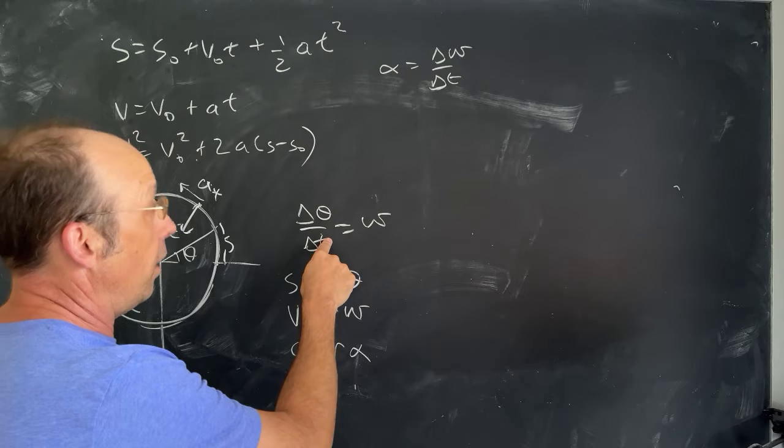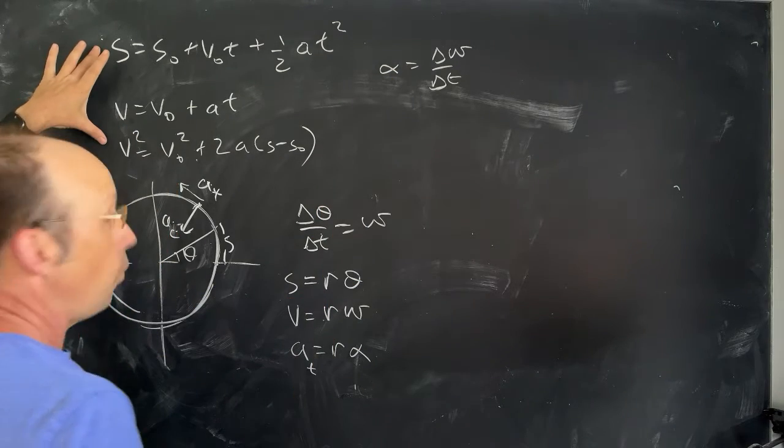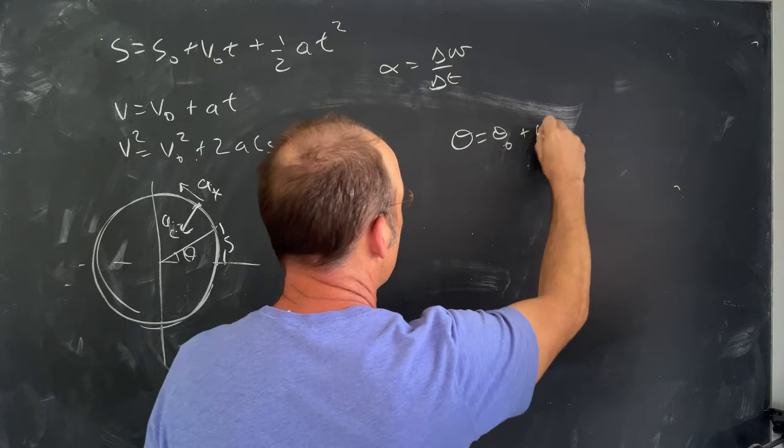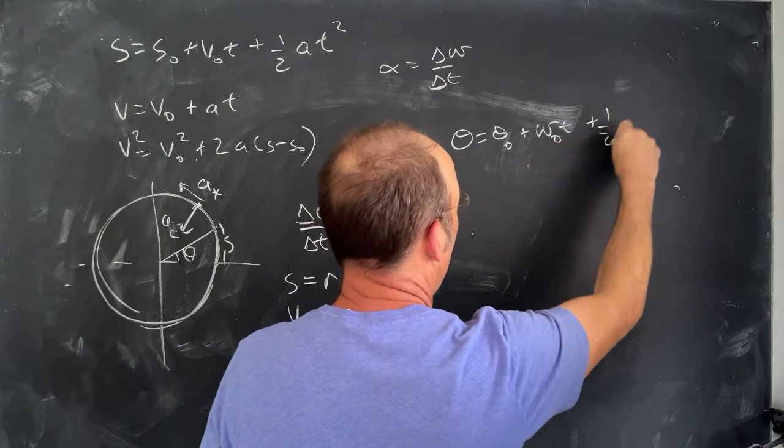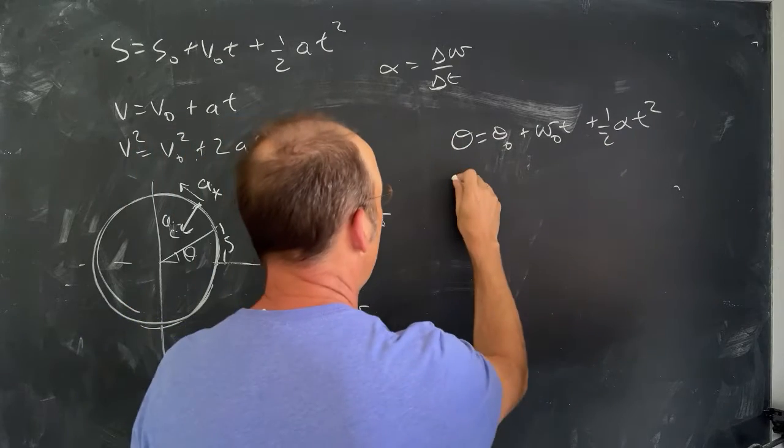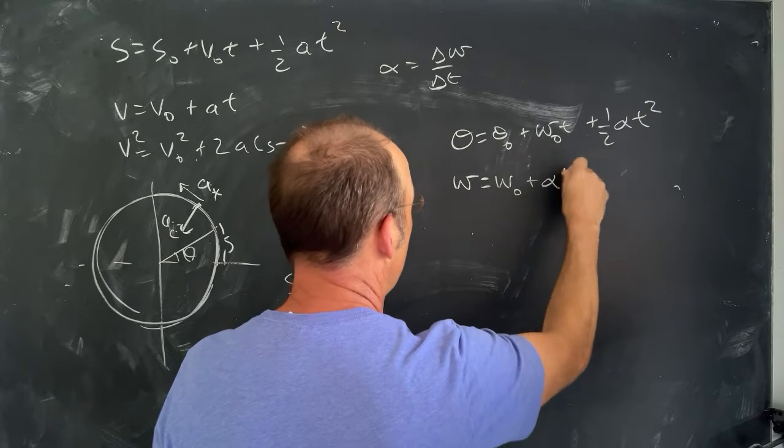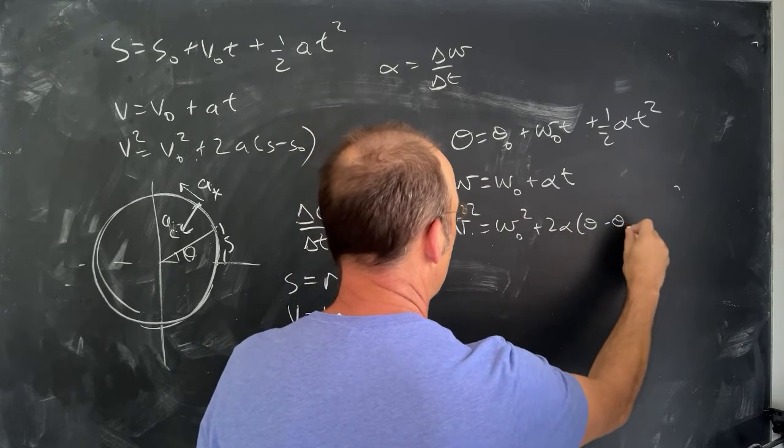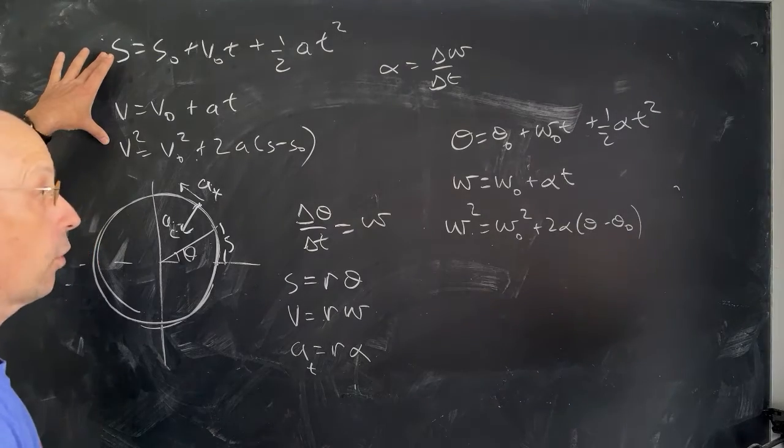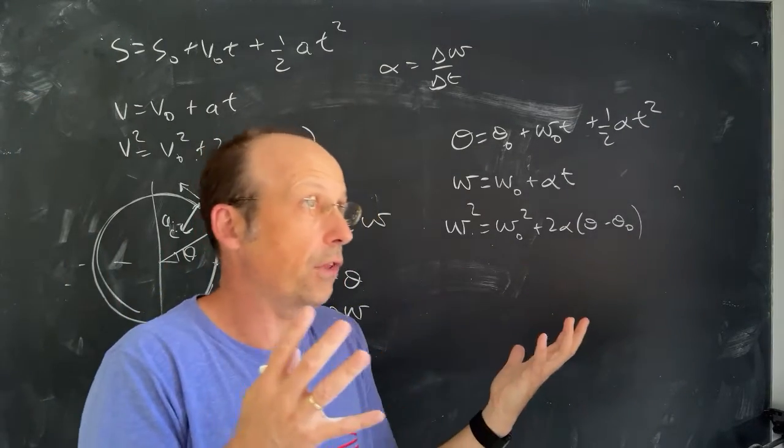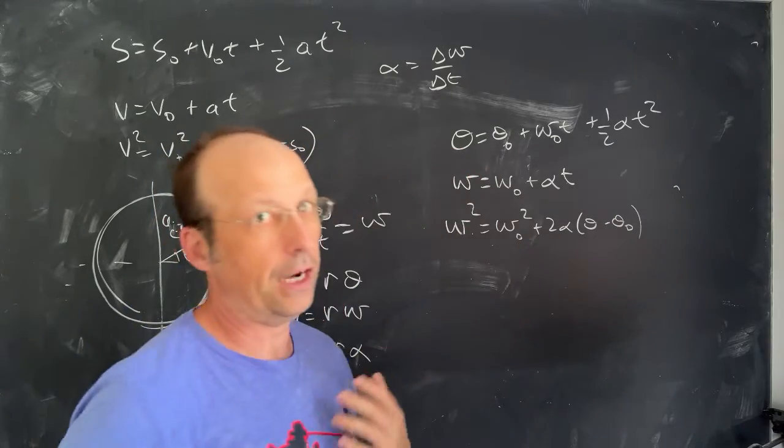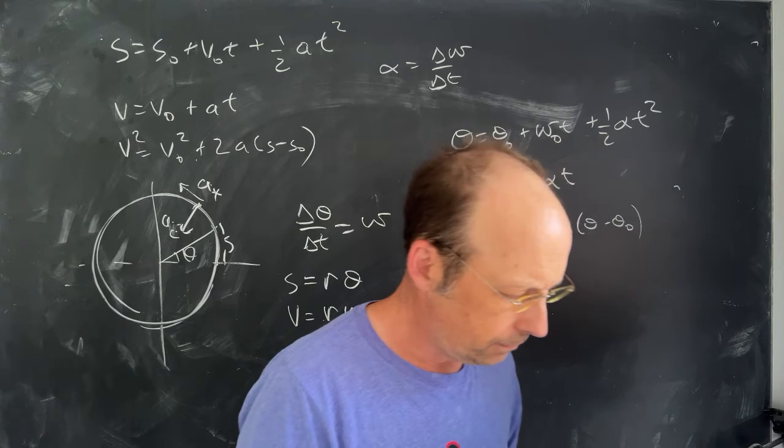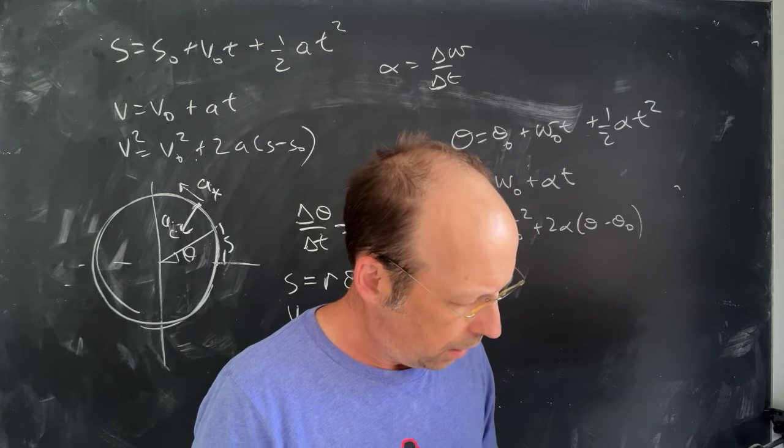But since we have the definition of angular velocity, the definition of acceleration, we can actually derive kinematic equations for angular quantities too. And we get θ = θ₀ + ω₀T + ½αT². Just like before. We get ω = ω₀ + αT. And we get ω² = ω₀² + 2α(θ - θ₀). So they look just like these, but instead of linear quantities, we have angular quantities. So when we have things moving in a circle and they're changing their angular velocities, then we can do similar kinds of calculations. They look the same. The equations are the same because the definitions are from the same thing.